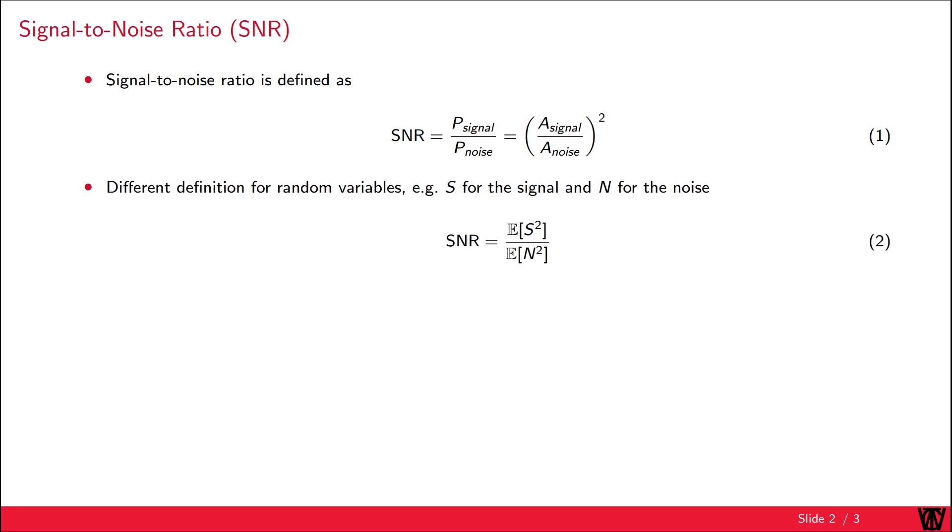If the SNR includes random variables, as in wireless communication systems, the definition includes the expectation operator due to the fluctuations of these variables.